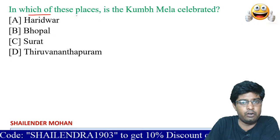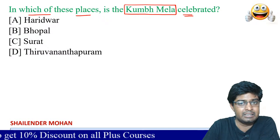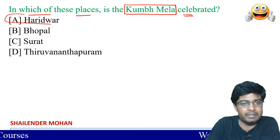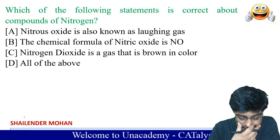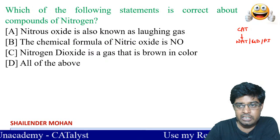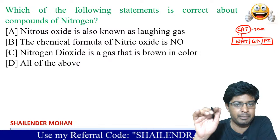In which of the following places is the Kumbh Mela celebrated? It is celebrated in Haridwar. For CAT exam, GS does not directly come in the written test, but it is important for the VAT examination and GDPI (Group Discussion and Personal Interview). So GS is very important for CAT aspirants as well after clearing the written test.